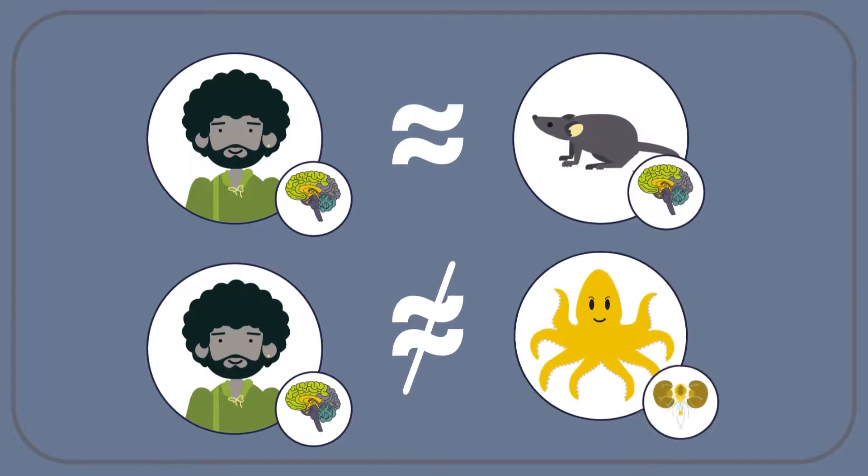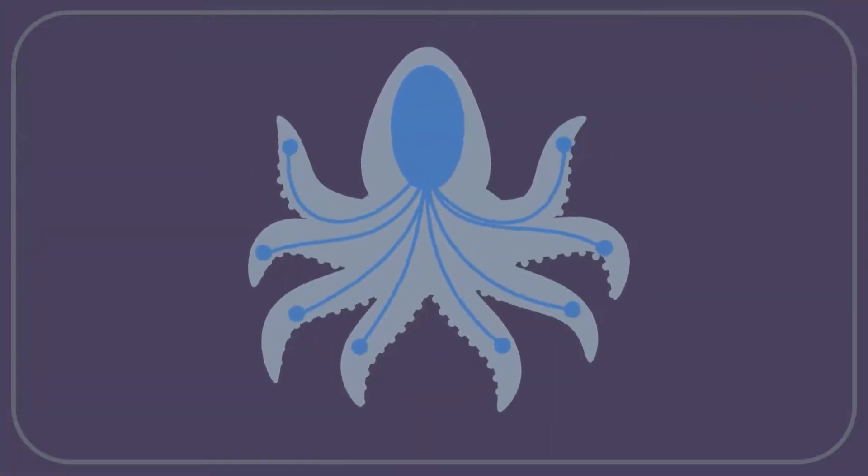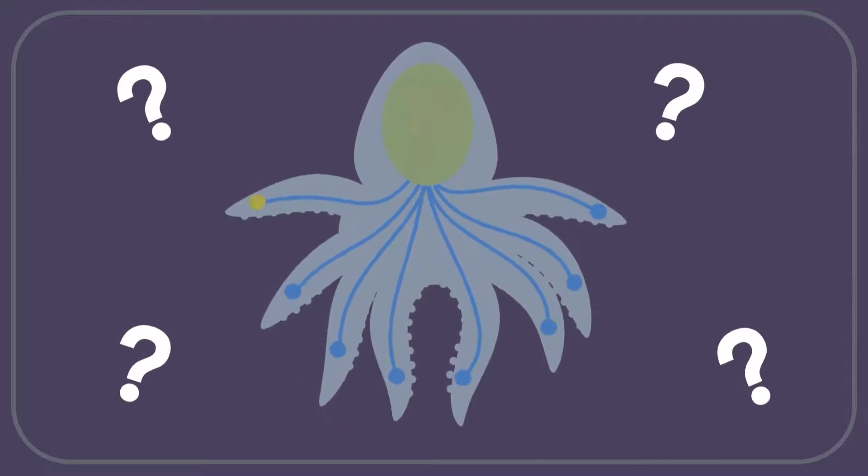But what about creatures that have very different kinds of brains? An octopus, for instance, is said to have nine brains. One central brain and one in each of its arms.